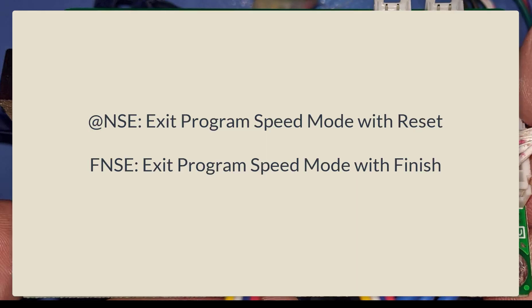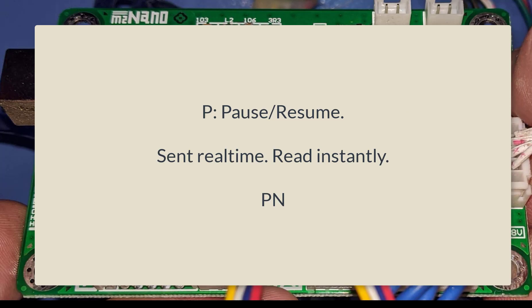When leaving program speed mode there are two ways: either '@nse' or 'fnse'. The '@' resets the value so you can set a different speed code, and 'f' makes the board send a finish signal when the buffer is completely empty. The p command is pause or zoom — it's sent in real time and isn't put into the command buffer. If two p commands are found in the same packet it causes the device to home. So the typical home command is 'ipp' — reset and then home the device.